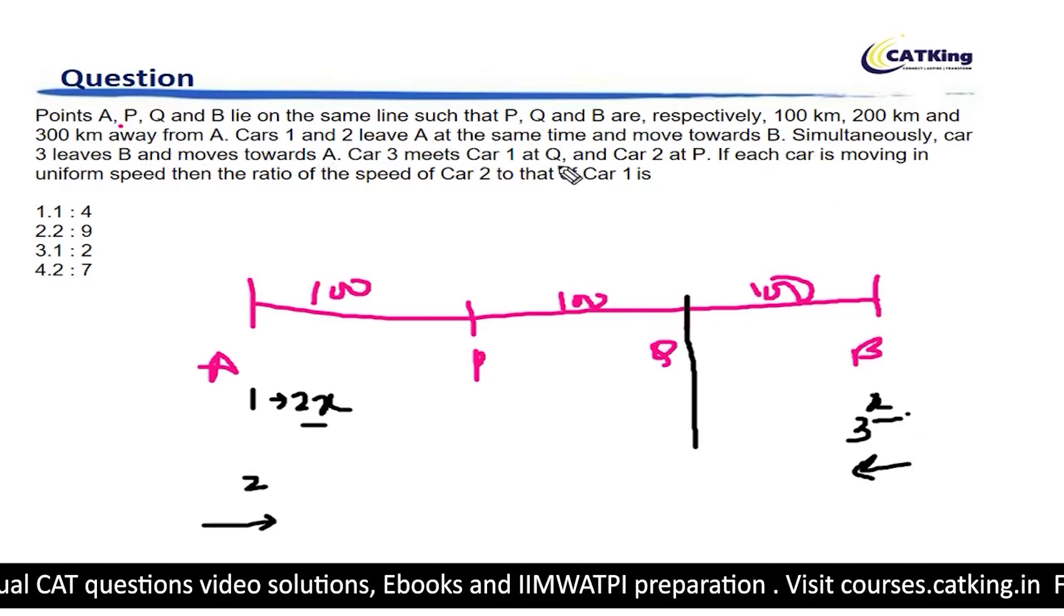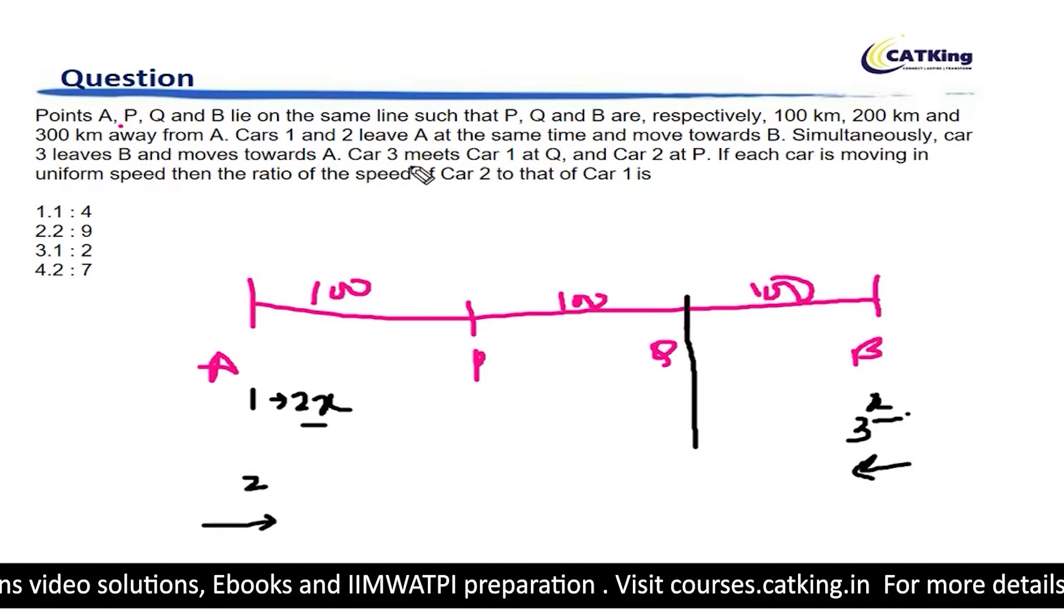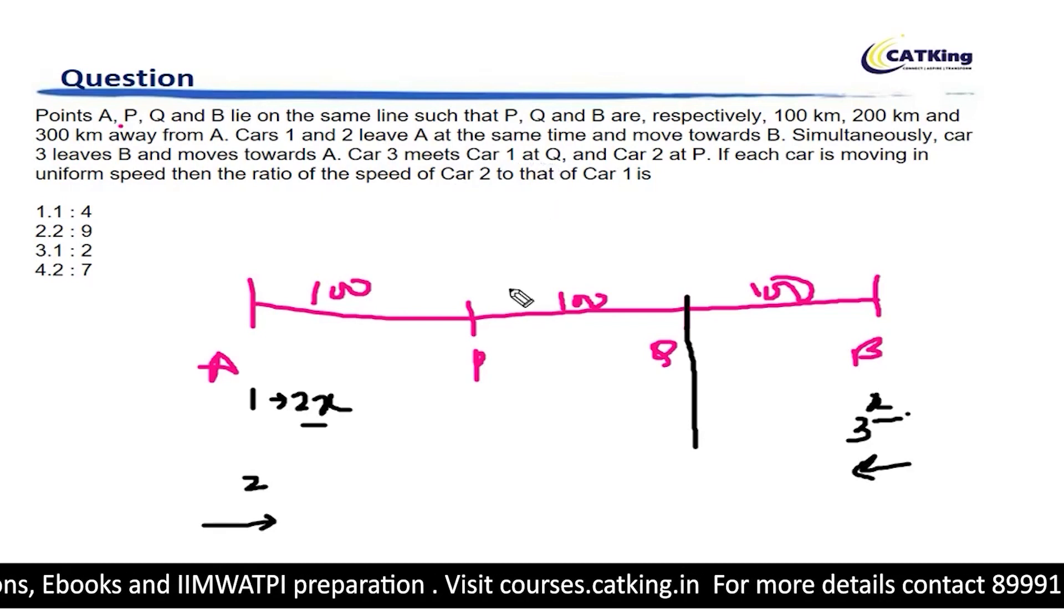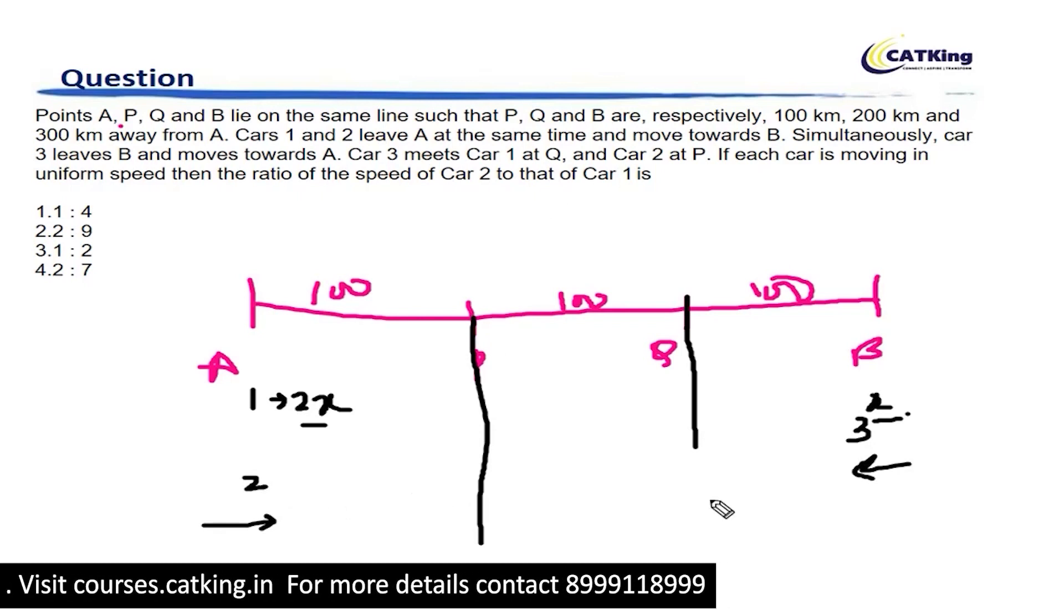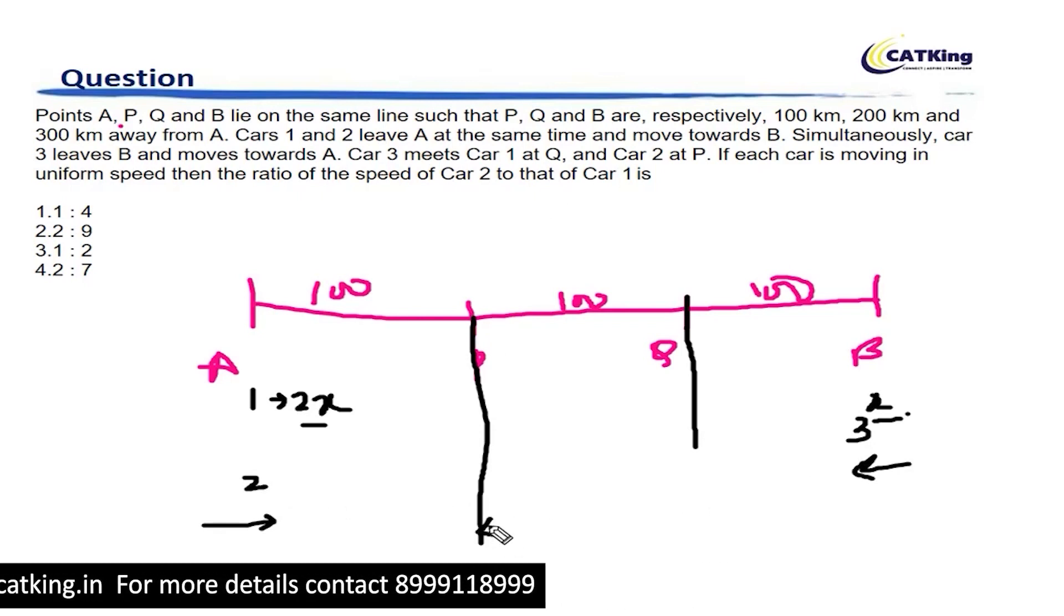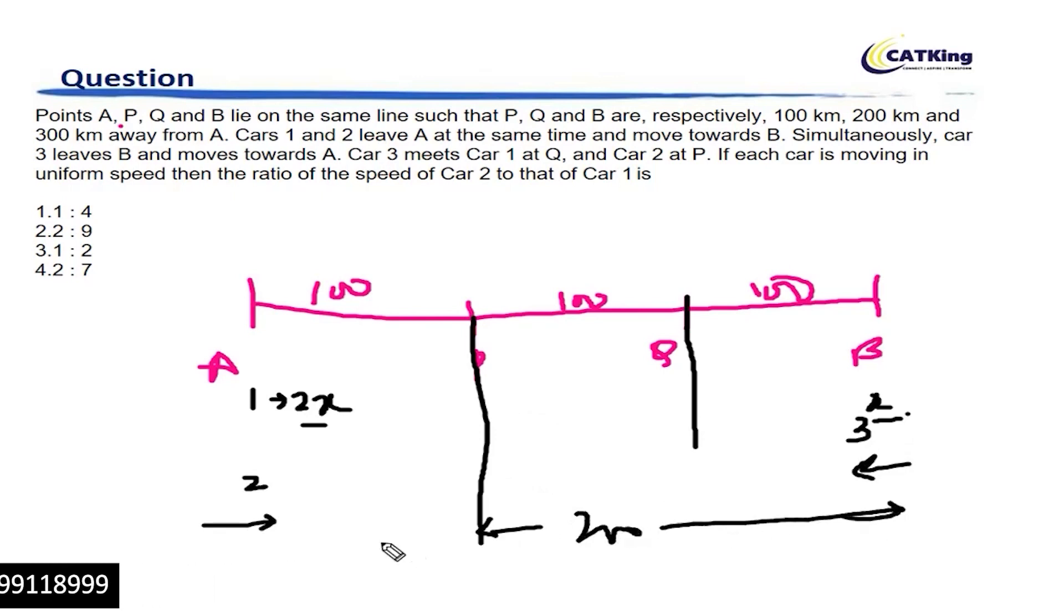Now what else do we know? Car 3 meets car 1 at Q and car 2 at P. At P, car 3 meets car 2, which basically means that car 3 travels 200 kilometers and car 2 travels 100 kilometers in the same amount of time. It basically means that speed of car 3 is double that of car 2, which means that if we have taken the speed of car 3 as X, speed of car 2 must have been X by 2.